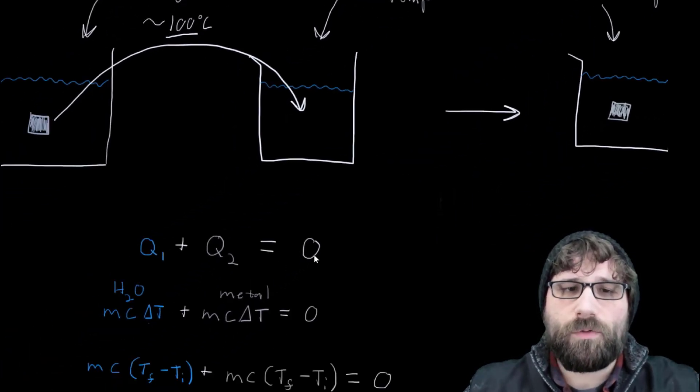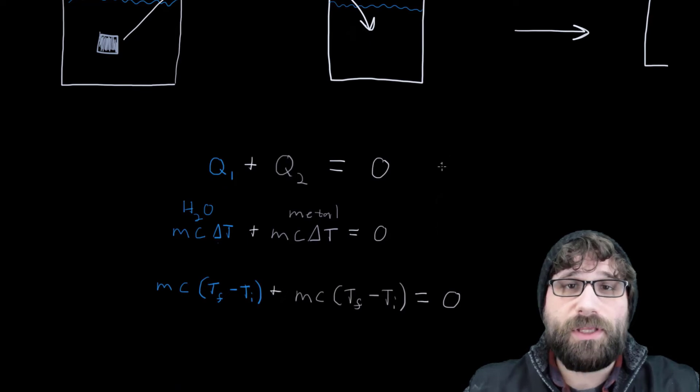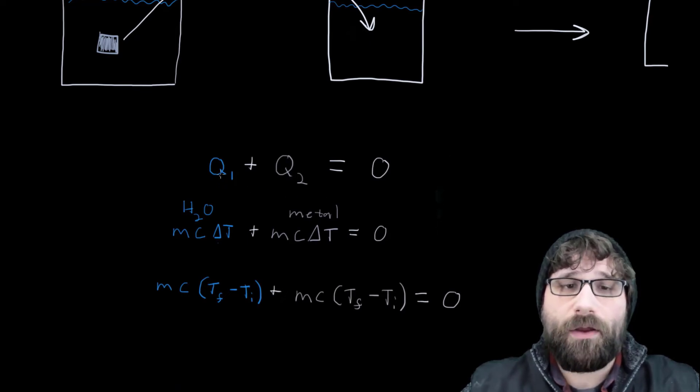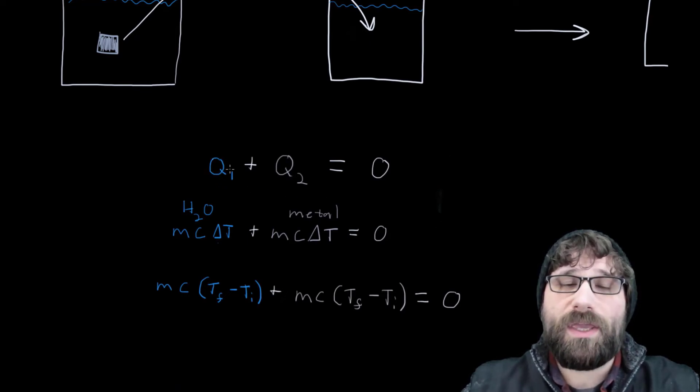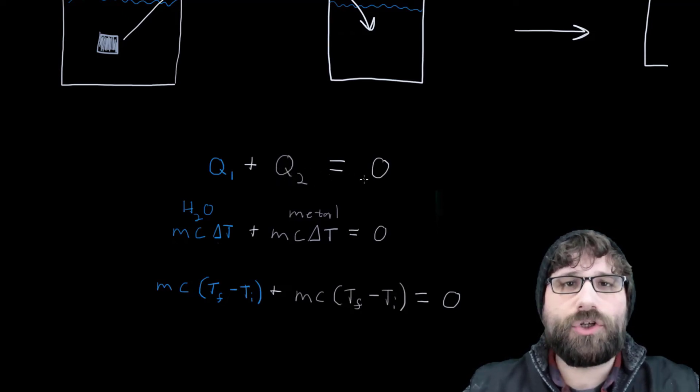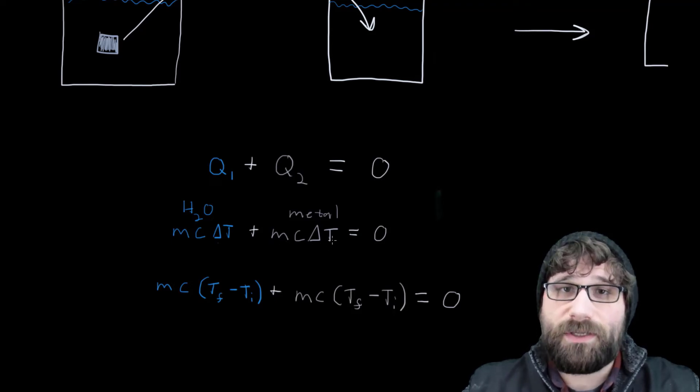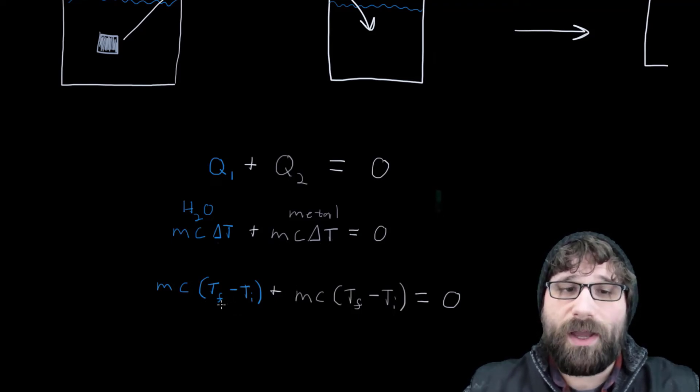That calculation will be just like other thermal equilibriums that we've already done, where we have the energy that's going into the water is the energy coming from the metal. And adding those together should equal zero by the conservation of energy. So I just have MC delta T for the water and MC delta T for the metal. Breaking out my delta T, I've got T final minus T initial.